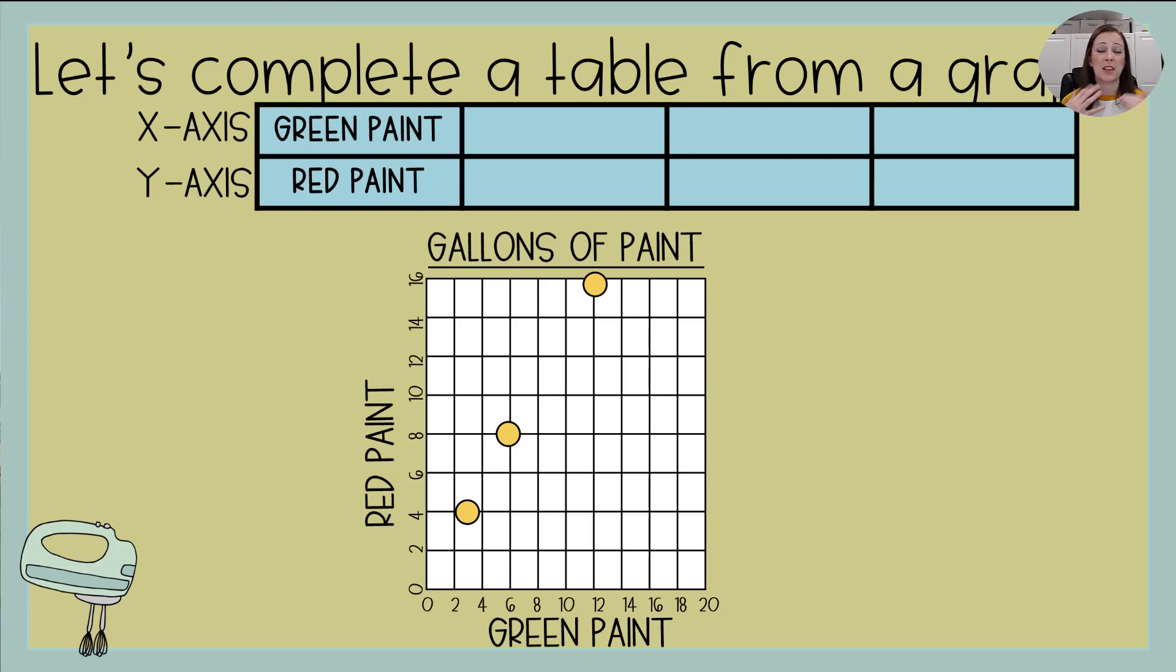All right. So now we're going to do the opposite. Now we've got the graph and we're going to complete the table. I've got green paint to red paint. I know that green is my x-axis. It's horizontal. Red is my y. It's vertical. That first dot looks to be on the green paint between two and four. So I'm going to call that three. So that would be three green. And then it goes up to four. So that must mean I need four reds. That next dot is real clear. It's six green and eight red. And then last but not least, I've got 12 green and 16 red.